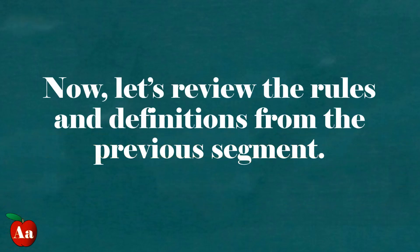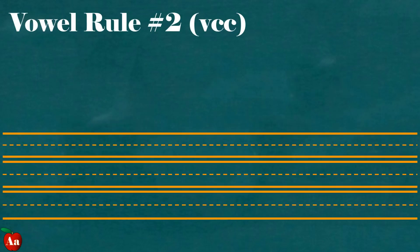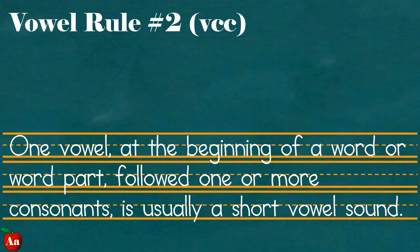Now let's review the rules and definitions from the previous segment. Vowel rule number two or VCC. One vowel at the beginning of a word or word part followed by one or more consonants is usually a short vowel sound.